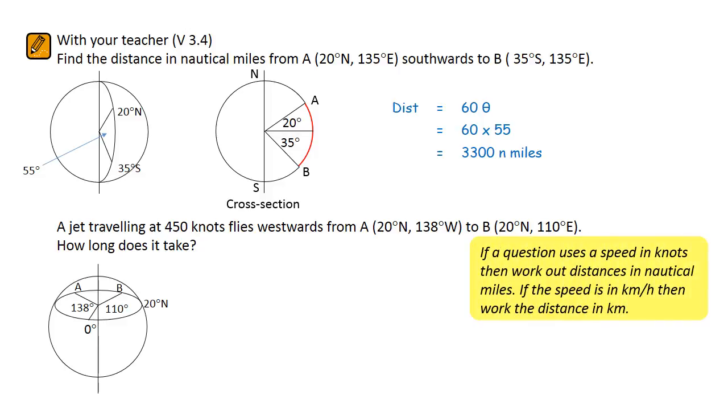But, if as in this example, the speed is in knots, then you want the distance to be in nautical miles. This question involves east-west travel, so a plan view diagram is appropriate.